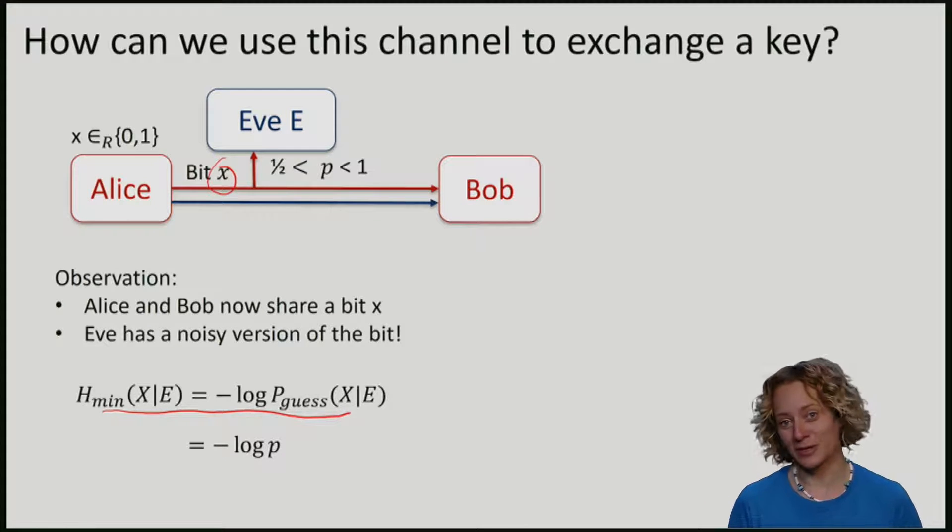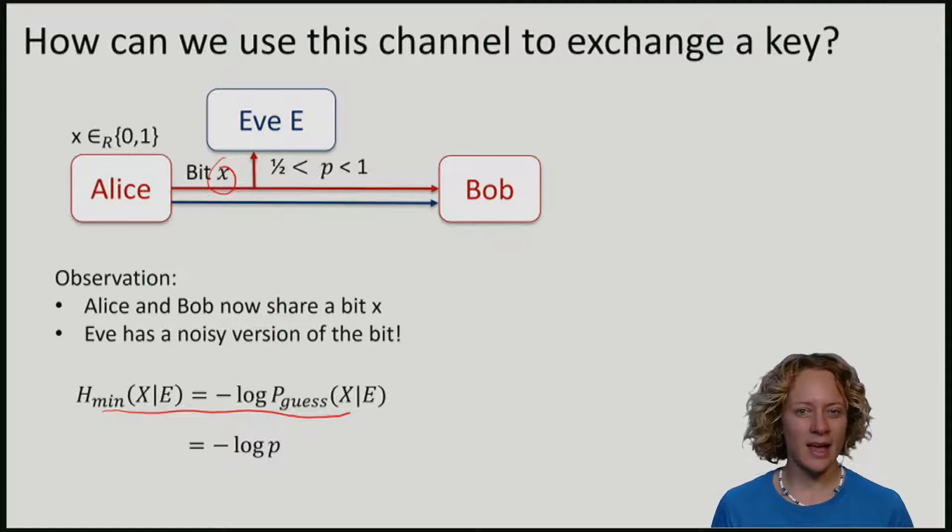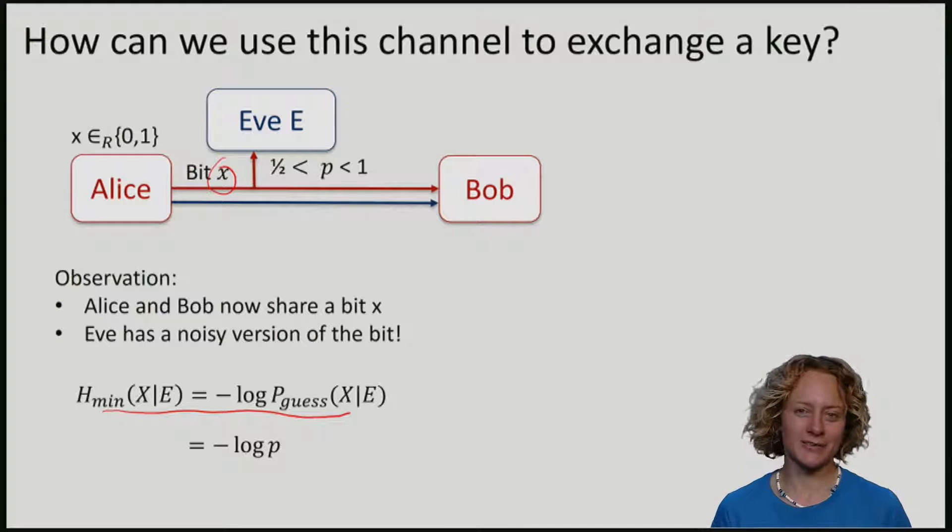We have now used our special fancy channel exactly once. How can we use these observations to come up with a protocol that allows Alice and Bob to distribute keys? I encourage you to pause this video for a second and give this some thought.